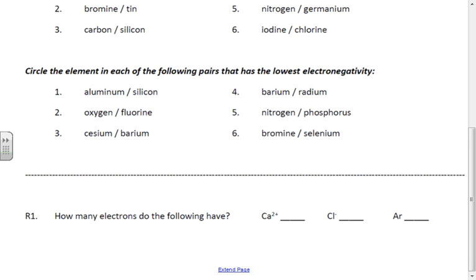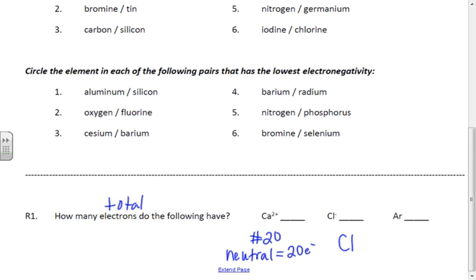You also have some review questions listed at the bottom about calcium. When it asks for how many electrons these have, that's going to be the total number of electrons. Whenever you look at the periodic table, calcium is number 20, which means when it's neutral with no charge, it has 20 electrons. So if it has a charge of 2+, you need to think about whether that means it lost two electrons or gained two electrons, and then write down the resulting number. You'll do the same thing for the chlorine ion — when it says Cl⁻, that minus means it has a charge of negative one.